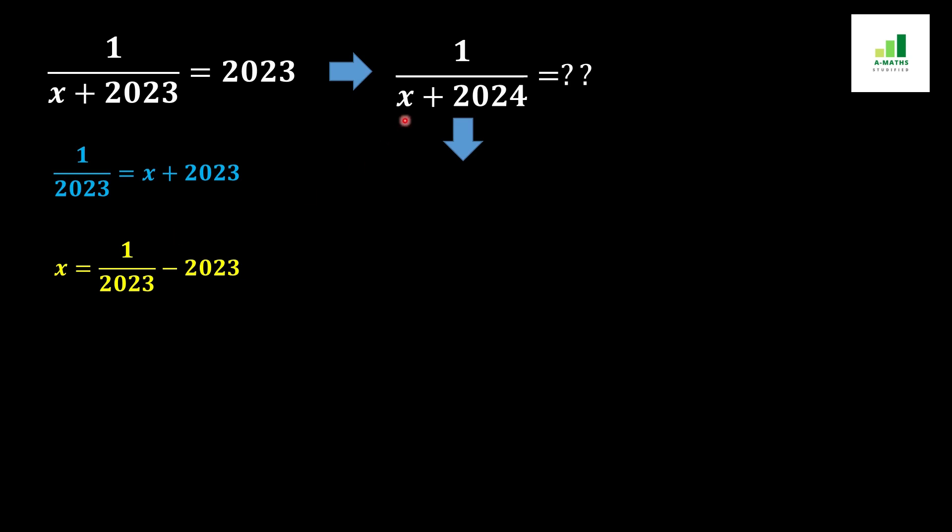After replacing this x from this value, we should get 1 in the numerator and in the denominator 1 over 2023 minus 2023 plus 2024 will remain the same. Now in the next step, this 2023 will subtract from this 2024.